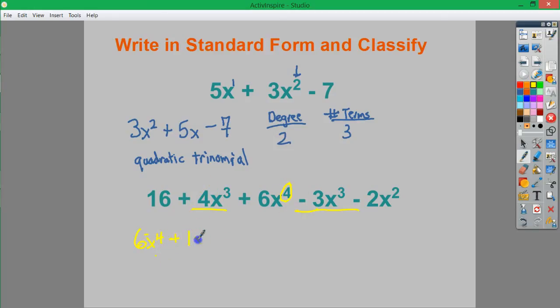So plus 1x to the third. x to the second power would come next, minus 2x squared. There is no x term or x to the first power, so I just don't have to write that. And then plus 16 tags on to the end.